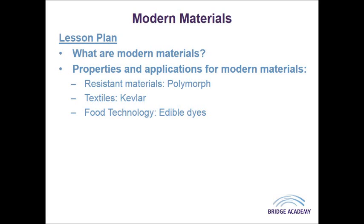Modern materials are quite often confused with smart materials. A smart material will change its property under external pressures — for instance, thermochromic pigmentation, where they change due to heat. However, modern materials don't do that. Modern materials are just basically materials that have been available only in recent history.